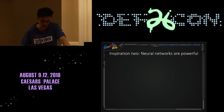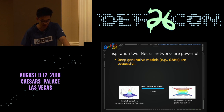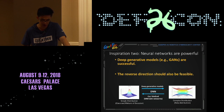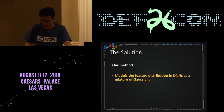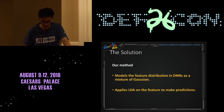To solve this, we take a second inspiration from the fact that neural networks are powerful. Prior work on deep generative models has demonstrated that a deep net can learn to transform a simple distribution, such as a mixture of Gaussians or a single Gaussian, to a complex data distribution. So we think the reverse direction should also be feasible, and this is actually what our method does in its nonlinear transformation part. Based on this analysis, in our method we model the feature distribution as a mixture of Gaussians, and then apply LDA on the feature to make predictions.